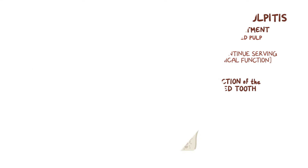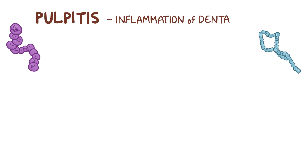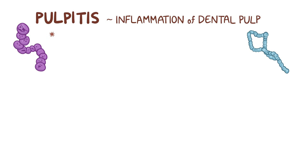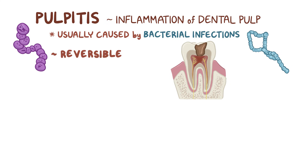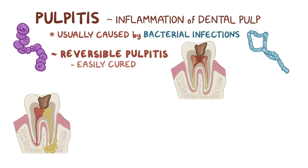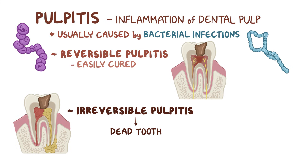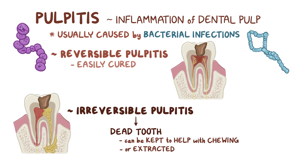As a quick recap: pulpitis is the inflammation of dental pulp that's most often caused by a bacterial infection. Reversible pulpitis is easily cured, whereas irreversible pulpitis leads to a dead tooth, which can be kept in place to help with mechanical chewing, or it can be extracted completely.